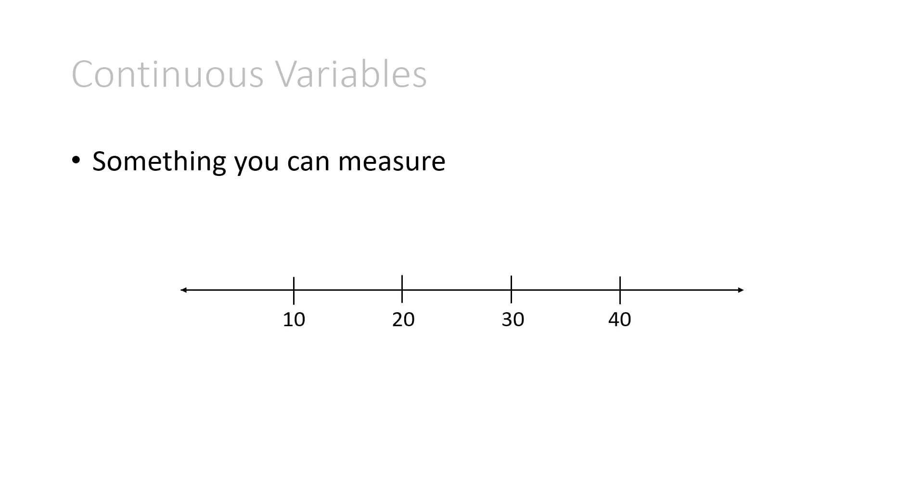So firstly we have continuous variables. A continuous variable is something you can measure. So you could put it on this number line. An example could be weight in kilograms or maybe height in centimeters. And although this number line only shows positive numbers, negative numbers are allowed as well.